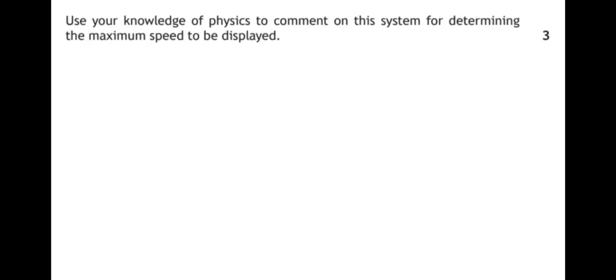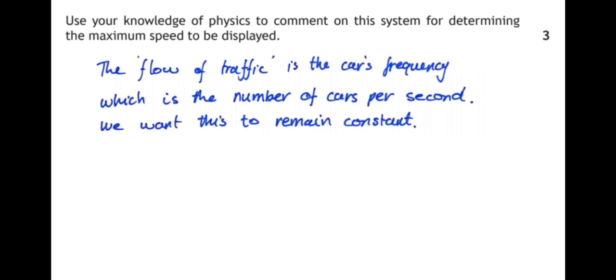Use your knowledge of physics to comment on this system for determining the maximum speed to be displayed. So the flow of traffic is effectively the frequency, which is the number of cars passing the detector per second, and ideally we want this to remain constant. The wavelength here is the distance between the cars, and we want this to not get too small or else they collide.